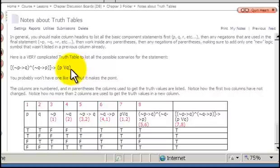What do we list after we list the basic components? First of all, the only two basic components are p and q. We have p in column 1 and q in column 2.